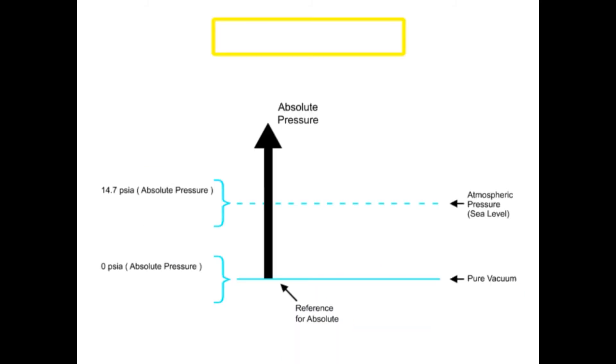For vacuum pressure, the scale begins at atmospheric pressure at sea level as the reference and ends at complete absence of pressure or pure vacuum.